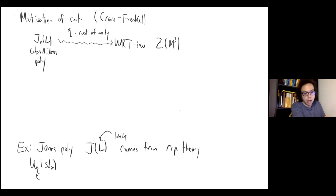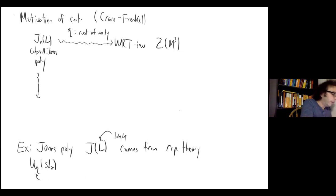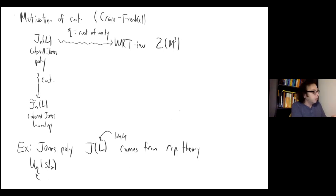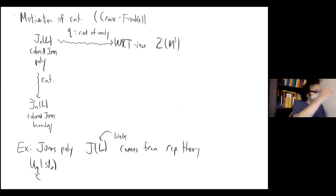In the mid-90s, Igor Frenkel and Lewis Crane introduced the idea of categorification. Roughly speaking, this colored Jones polynomial — a Laurent polynomial invariant of links — gets upgraded to a homology theory of links, something like 'colored Jones homology.' The Euler characteristic of this homology theory is the original Jones polynomial. They postulated this thing existed, and then Khovanov actually constructed it soon after Crane and Frenkel introduced the program.